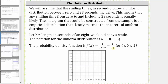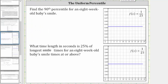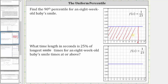For our first example, we are asked to find the 90th percentile for an eight-week-old baby's smile. This is the smiling time where 90% of the smiling times will be less than or equal to that smiling time. Looking at the graph, there is some smile time k, approximately here, where 90% of the other smiling times are less than or equal to k, meaning the area under the curve to the left of k must equal 0.9.